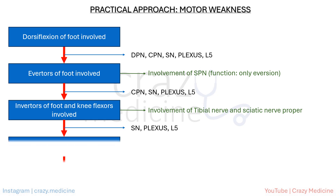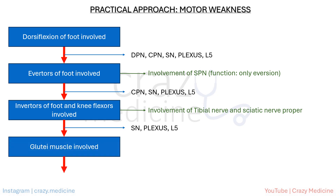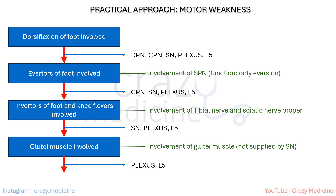If there is weakness in the gluteal muscles, we note that the sciatic nerve does not supply these muscles. Hence, the lesion must be above the sciatic nerve, allowing us to rule out the sciatic nerve and focus on lumbosacral plexus or root lesion. This further narrows down our diagnosis to root or plexus involvement, which can be identified through history and confirmed by imaging.